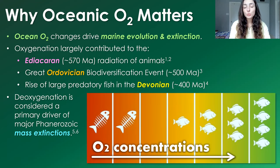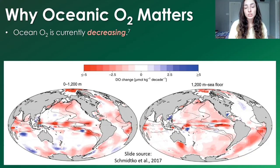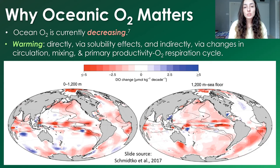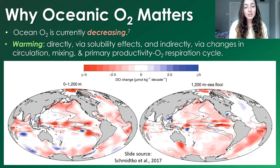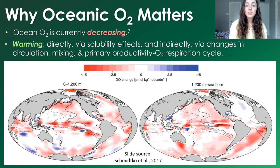The Phanerozoic eon is the eon that we are currently in — basically from the Cambrian period around 540 million years ago to today. But it's not like oxygen concentrations were important back then but are not anymore; they still very much are. Currently, oxygen concentrations in the ocean are decreasing due to global warming, both directly due to solubility effects, as well as indirectly by changes in circulation mixing and the primary productivity oxygen respiration cycle.